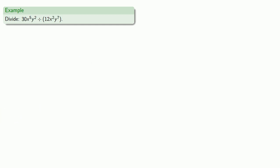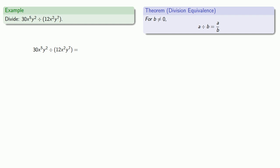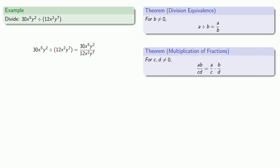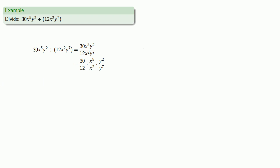Or we could take something more complicated: 30x to the fifth y squared divided by 12x squared y to the seventh. We can rewrite the division as a fraction. The numerator and denominator consist of terms that are multiplied together, so we can split the fraction apart and rewrite it as a product of fractions. We can then try to simplify each part separately. Let's take a look at that first fraction, 30 over 12, and see what we can do to simplify it.